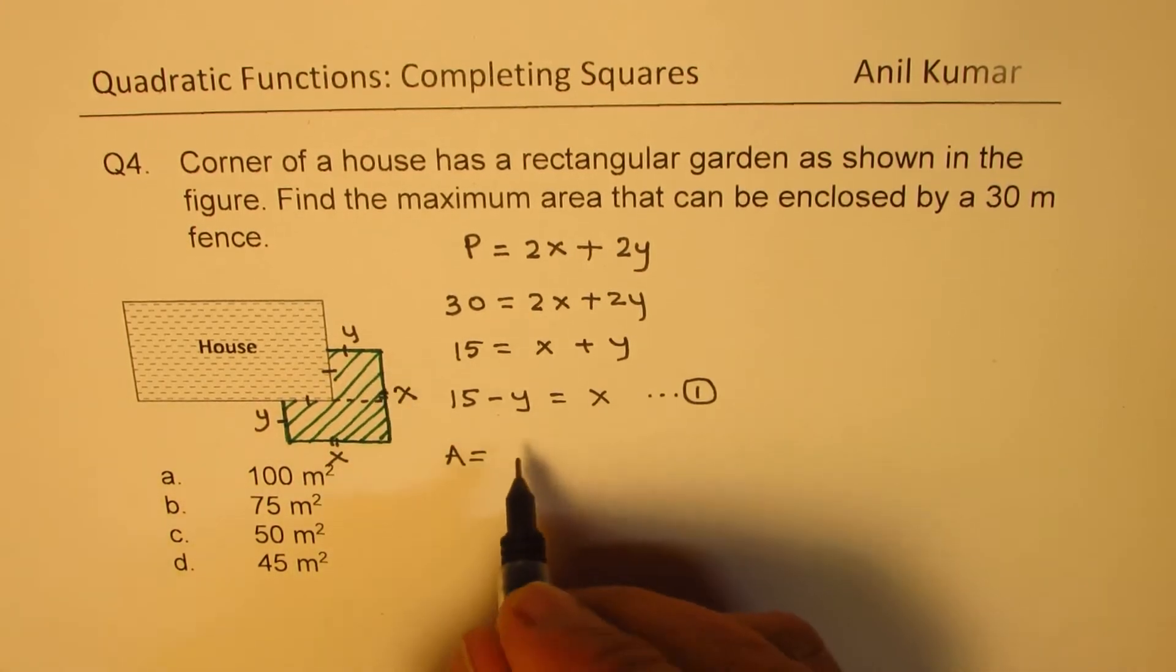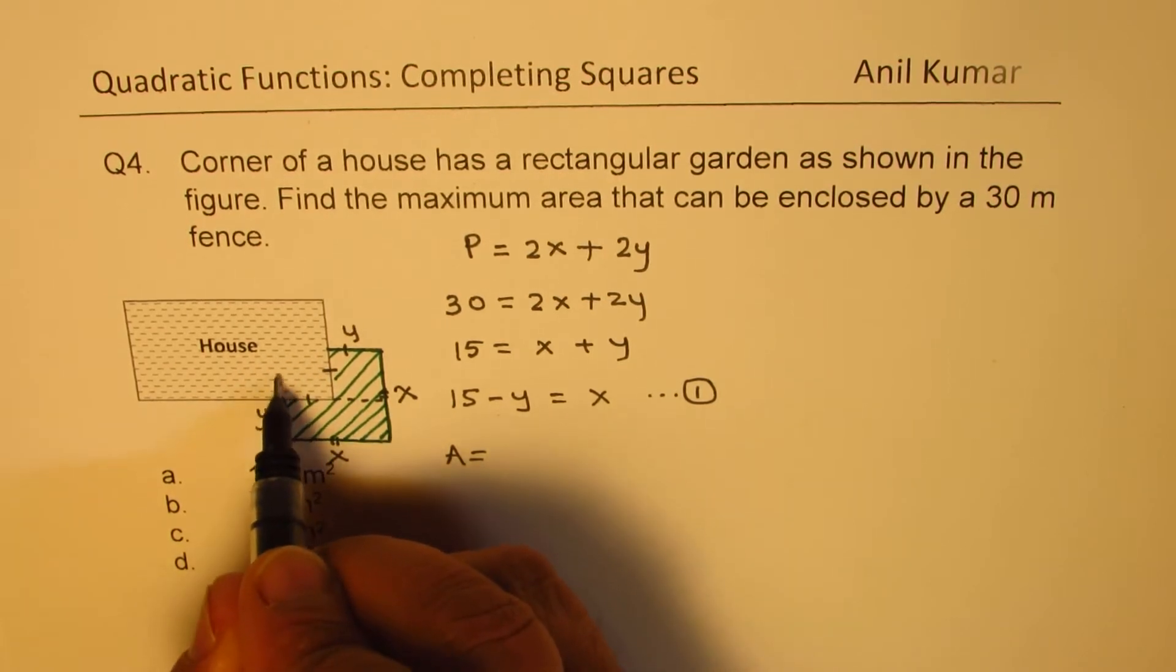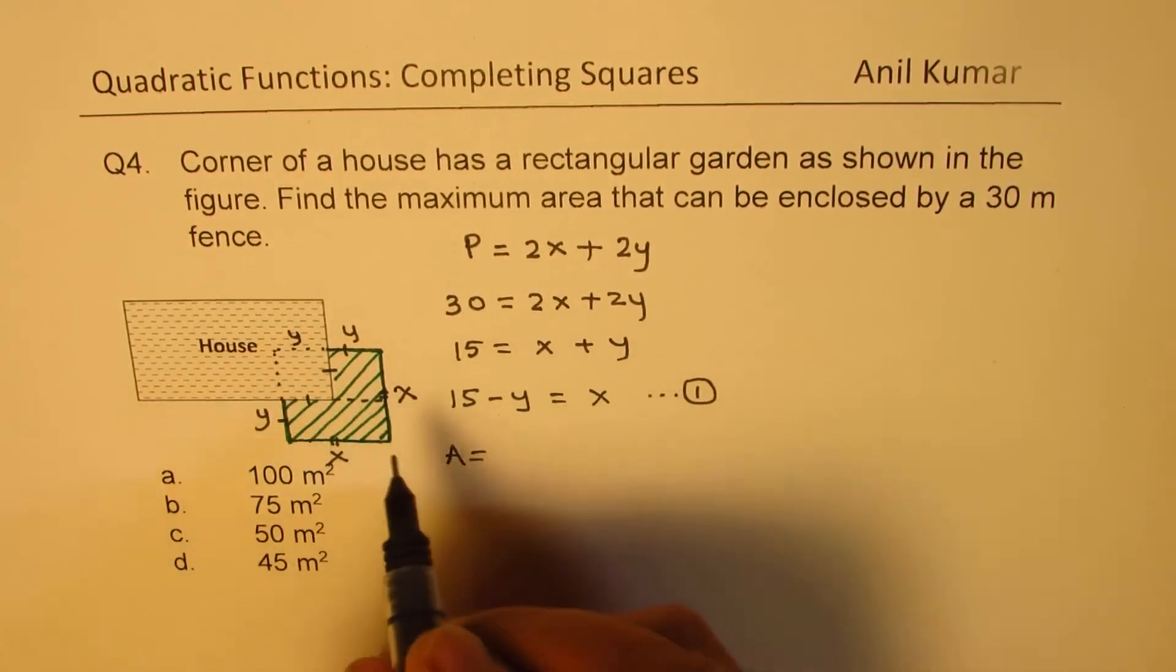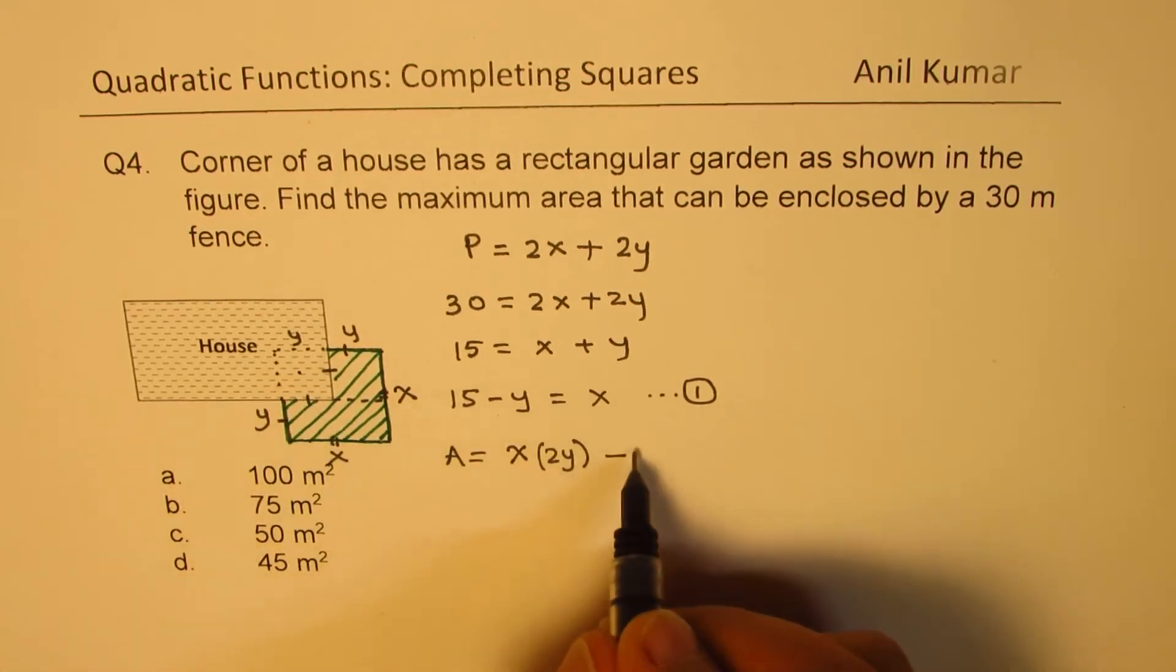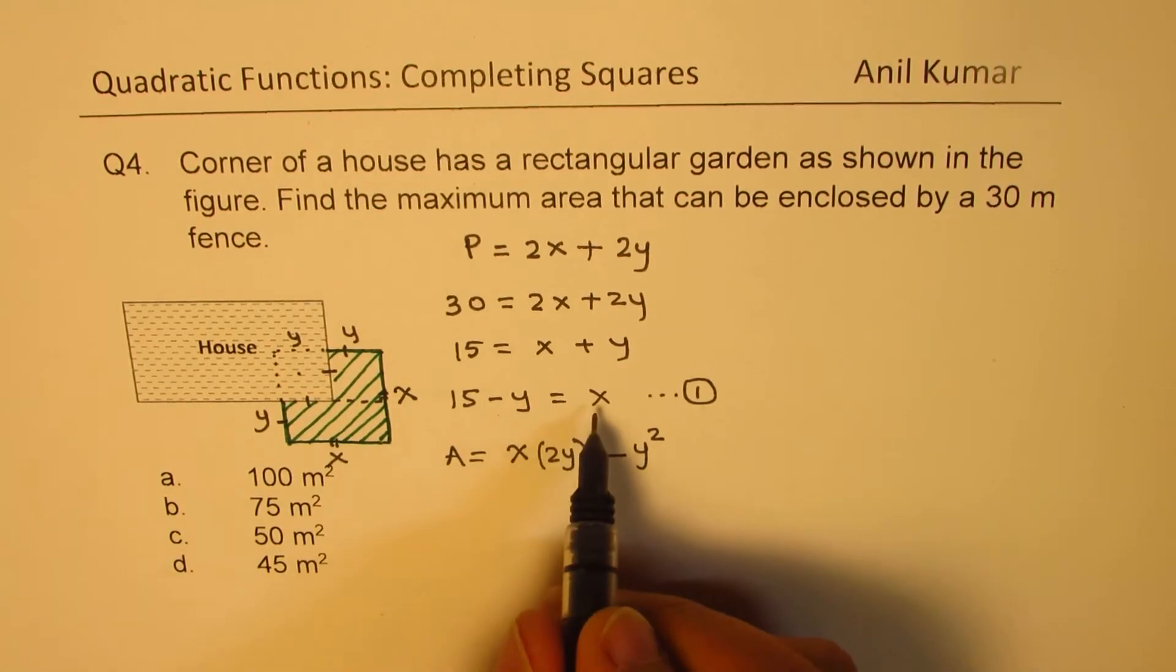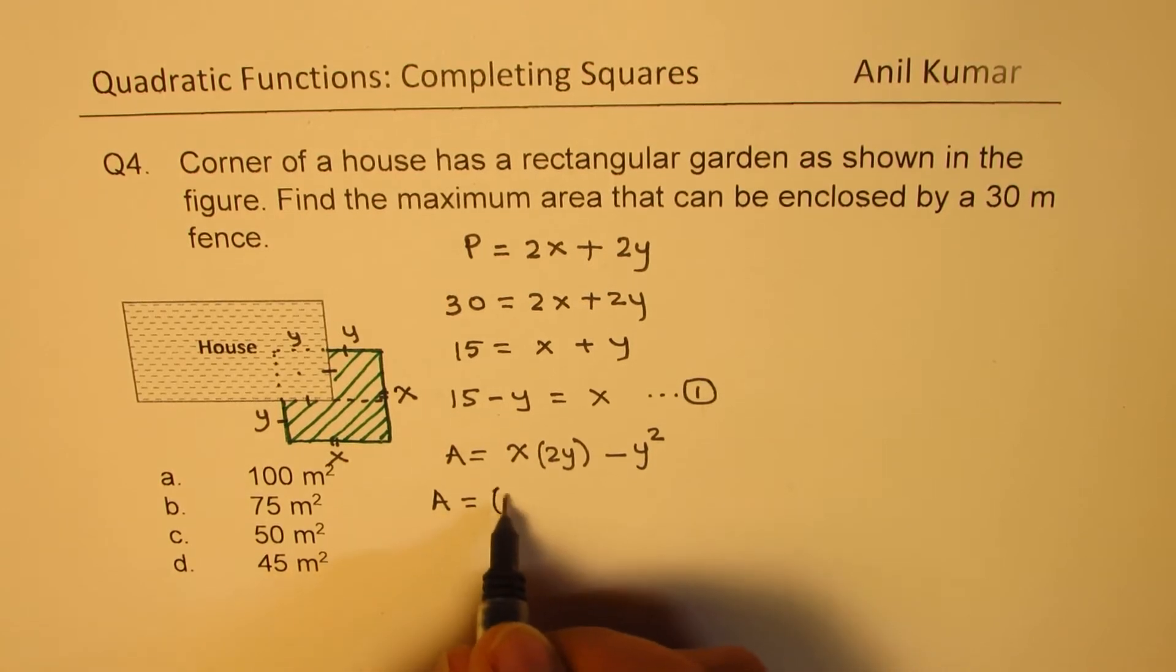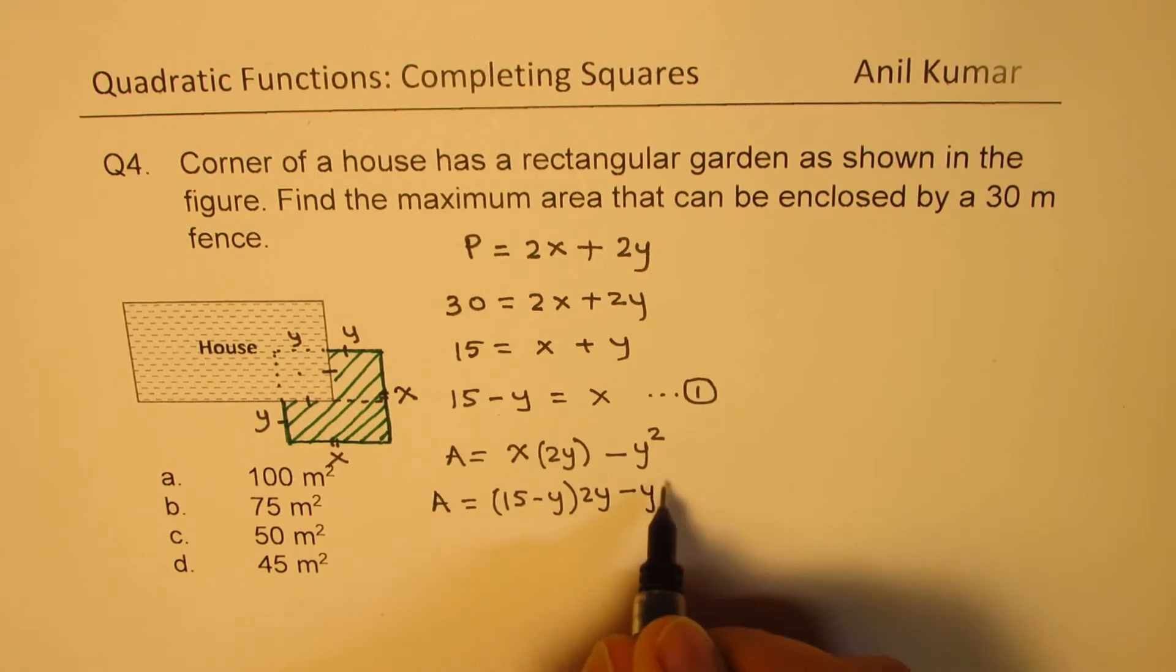What you can do is multiply, because all these sides are equal. We're assuming this to be x times y. We can write x times 2y, since this length is y and y. So the area is x(2y) - y². We take away this square.